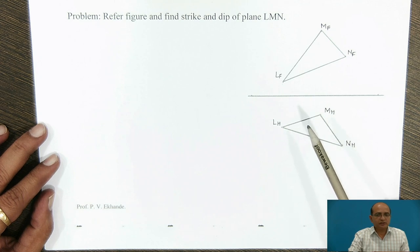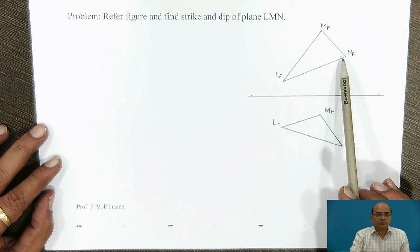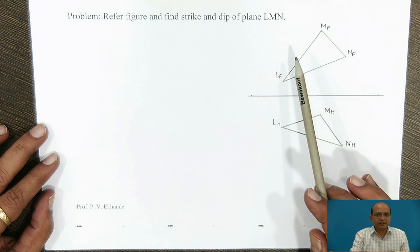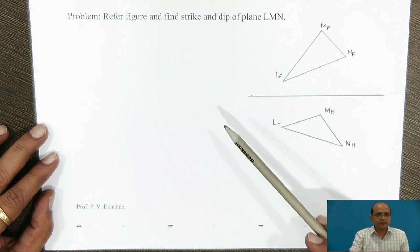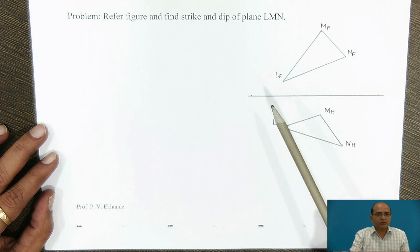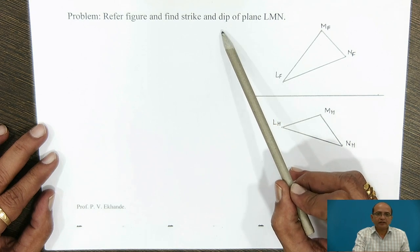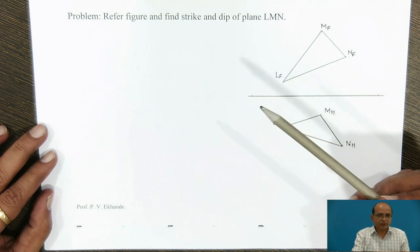Strike is nothing but the bearing of the true length line which is in the horizontal condition — that bearing is called the strike of the plane. We should have a horizontal line in the front view, a line parallel to the ground, which indicates true length in the top view, and the bearing of that line is the strike of the plane. For the dip of the plane there are two things: dip direction and dip angle. We will be finding out both the dip angle and the dip direction.